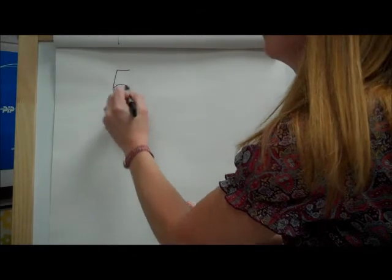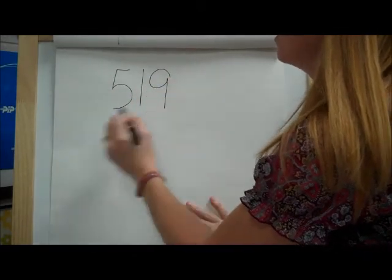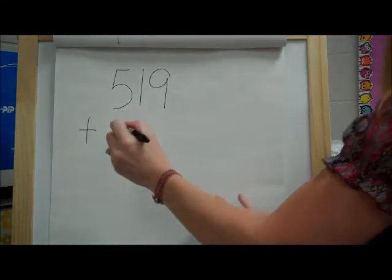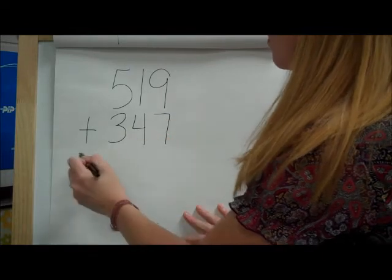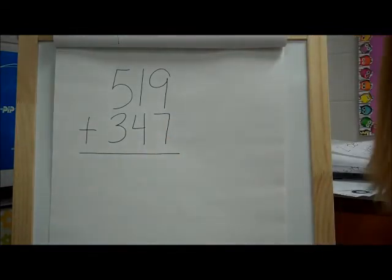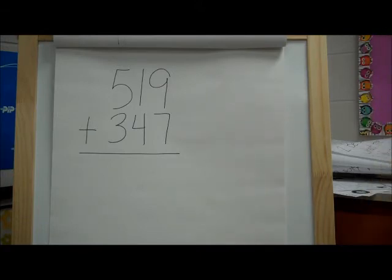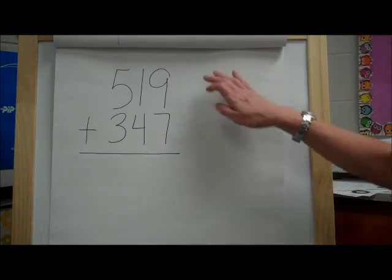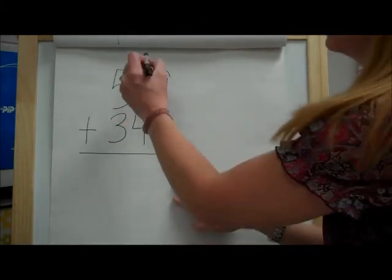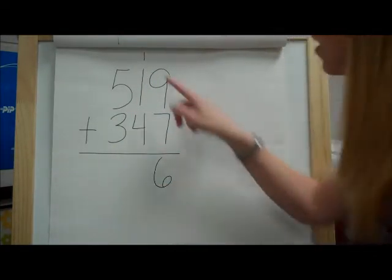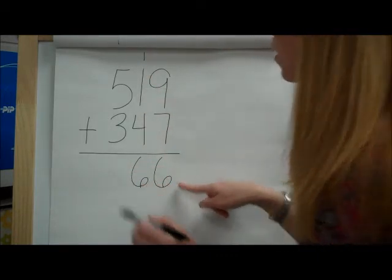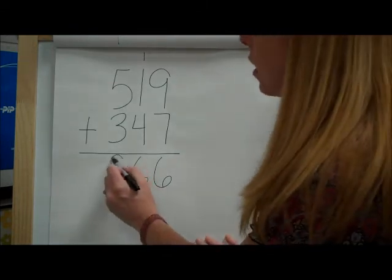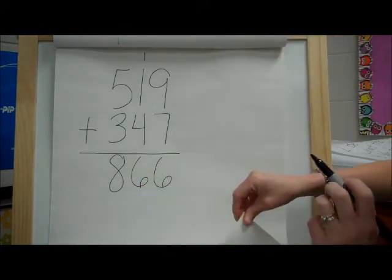All right, let's do five hundred nineteen plus three hundred forty-seven. Okay, once again, press pause, work it out, and then press play and we'll work it together. All right, you ready? Here we go. All right, nine plus seven is sixteen, so I'm going to regroup there. Put my six down here, so sixteen. Four plus one plus one is six, and five plus three is eight. All right, so we're going to do one last one. This will be your ticket into math class tomorrow, so make sure you have this with you when you come to class.